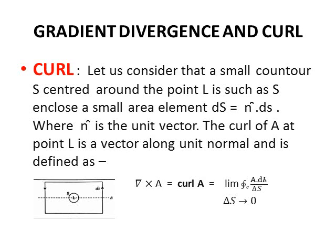Now, let's consider that a small contour S centered around the point L is such that S encloses a small area element dS which is equal to n cap dot dS, where n cap is the unit vector. The curl of A at point L is defined as del cross A equals curl A equals limit as delta S tends to zero of closed integral A dot dL upon delta S.